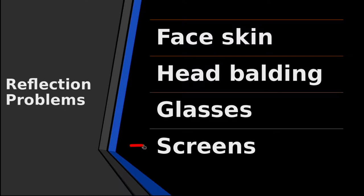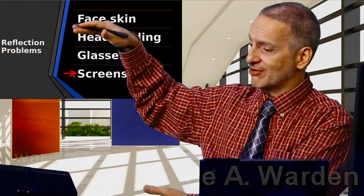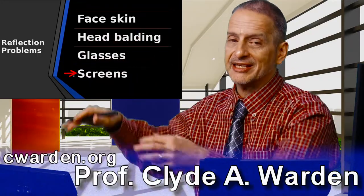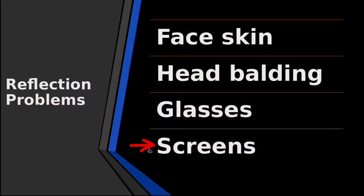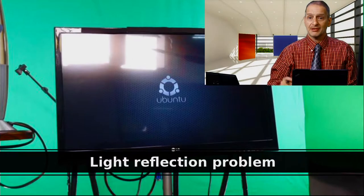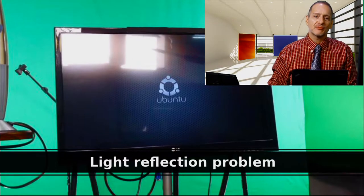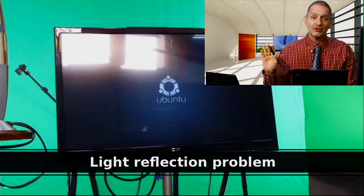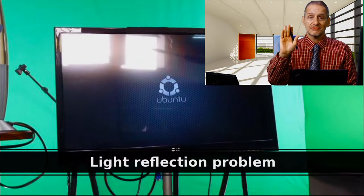What about glasses? This is a problem I almost always have when recording students, because so many students here in Taiwan wear glasses. The light shines into the glasses and looks like a super bright spot pointing right at the lens. Another common problem is television or monitor screens — when shooting video we often want a screen to show something, but that monitor can reflect light right into the camera.